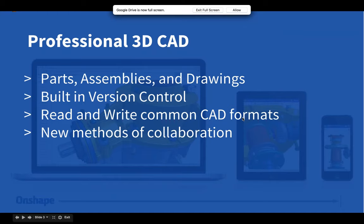Onshape considers itself professional 3D CAD. When you think of professional 3D CAD, it's really three pieces: parts, assemblies, and drawings. We have all three major pieces of a professional 3D CAD system. What's unique about Onshape is that you'll see it evolve very quickly.